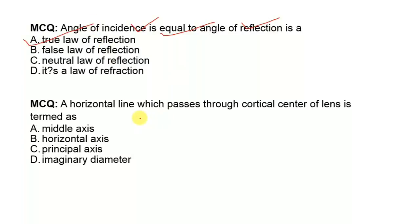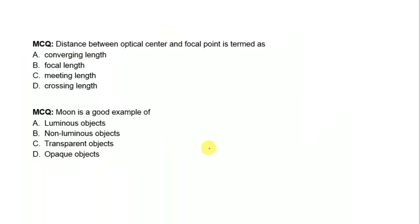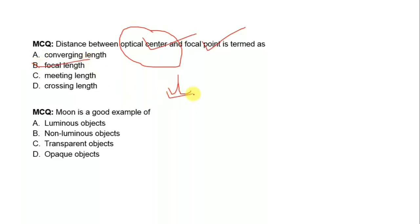Next question: a horizontal line which passes through the optical center is the principal axis. The distance between optical center and focal point is the focal length. Next question: Moon is a good example of a non-luminous object.